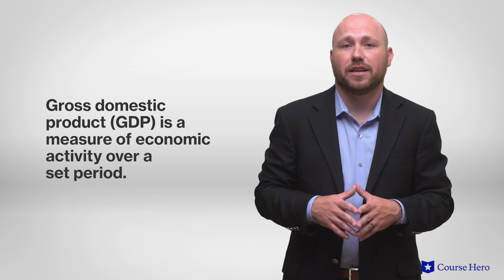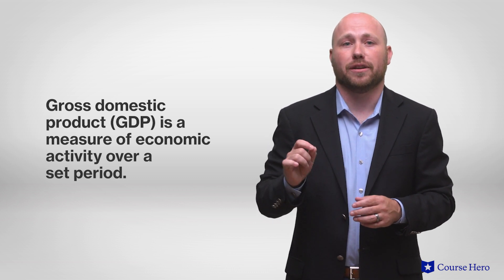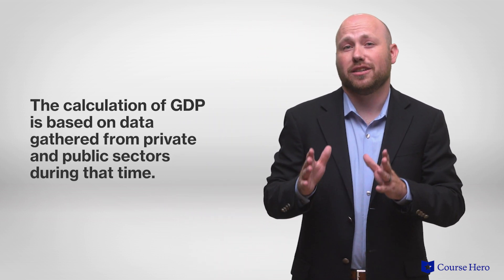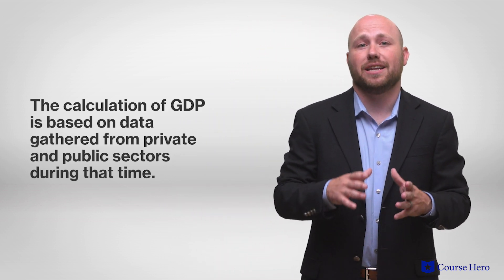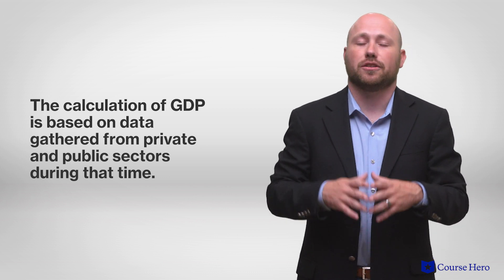GDP is a measure of economic activity over a set period. A unit of time may be chosen. This is typically one year, but GDP can also be calculated at quarterly intervals. Once a designated time period is chosen, the calculation of GDP is then based on data gathered from the private and public sectors during that time.